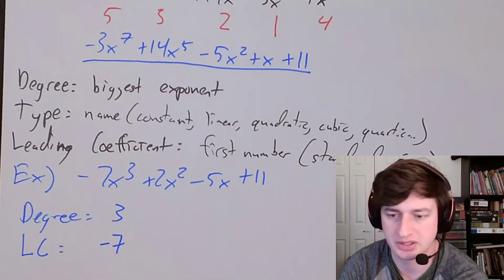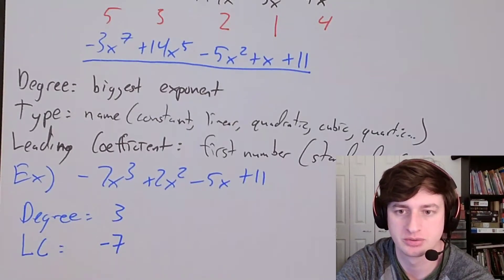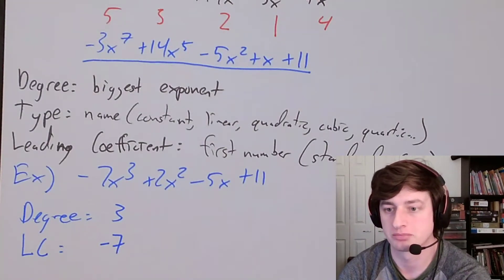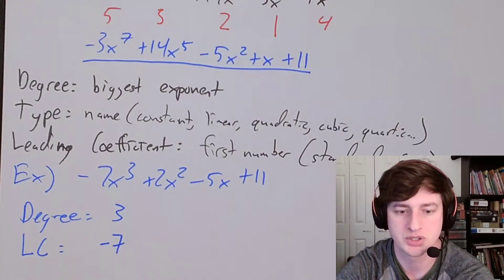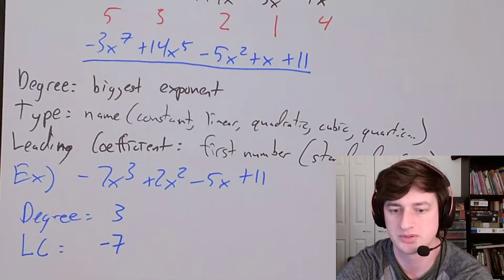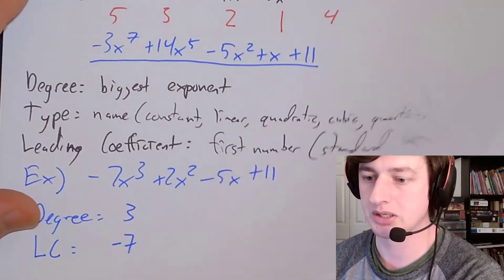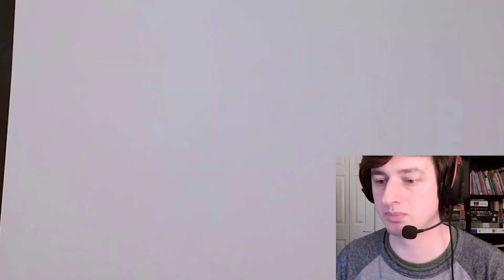The degree and the leading coefficient are going to tell us two things, so we're going to make a chart to keep track of that information. There are four combinations. We've got about 15 minutes — that should be enough. I'm going to use another piece of paper for this. The chart takes up about a whole piece of paper and you're going to use it a bunch, so you might want to be able to move it around rather than keeping it in one place in your notebook. This is our end behavior chart.